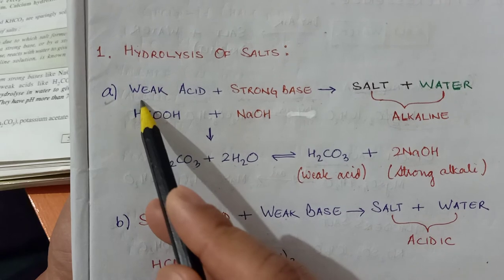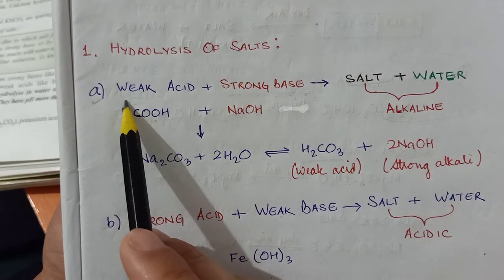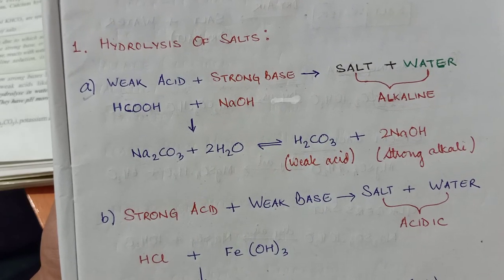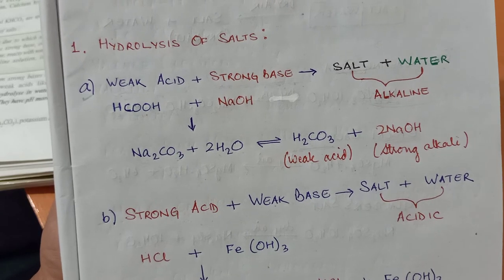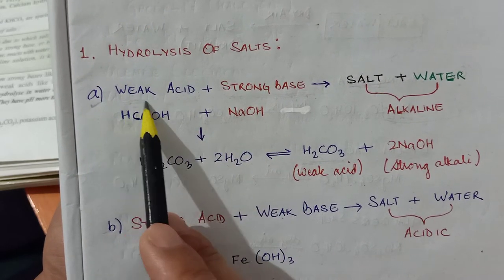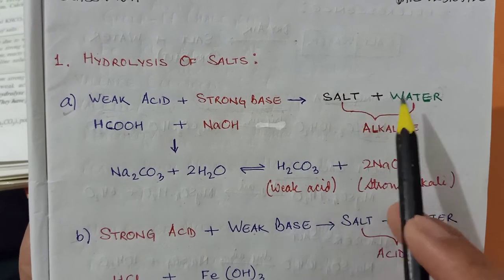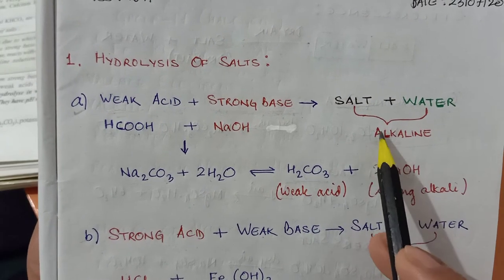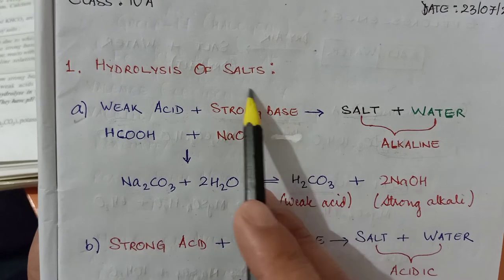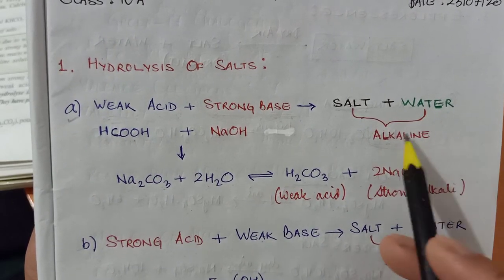If we take acids and bases of opposite strength — one strong and the other weak — then this hydrolysis phenomenon will take place. First condition: if the acid is weak and undergoes reaction with a strong base, they will produce salt and water, but this salt and water again react with each other to form an alkaline solution, because the salt is produced by the action of a strong base on a weak acid, so the resultant solution will be alkaline.